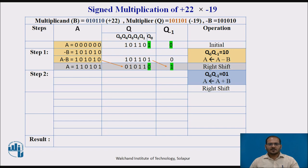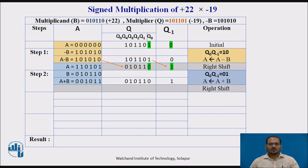In step 2, the operation depends on Q0 and Q-1 from step 1, which is 0-1, so the operation is A plus B and right shift. B value is 010110. Perform A plus B — the result is 001011. Keep the value of Q and Q-1 as-is. Then perform the right shift of A, Q, and Q-1 by 1 bit to the right. This is the result at the end of step 2.